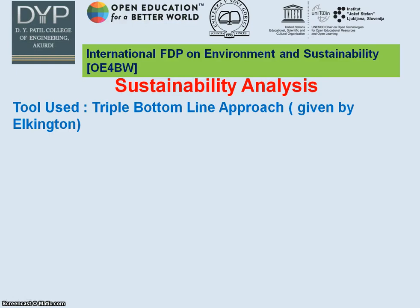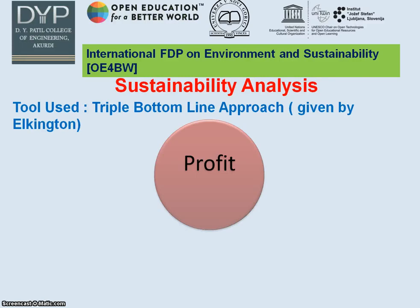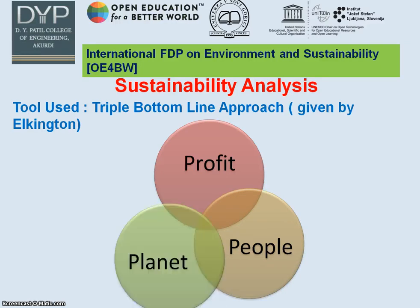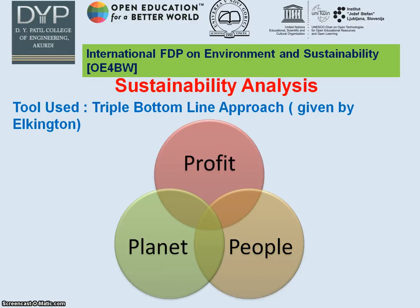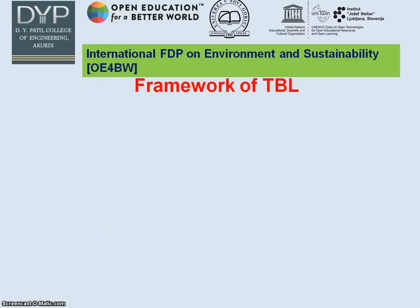For sustainability analysis, the tool used is the triple bottom line approach, given by Elkington. The first parameter is profit, which talks about the income statement and the benefit of the stakeholder. Then comes people, the social bottom line of the triple bottom line approach. And then the planet, or the environmental bottom line, which talks about the environmental approaches of industries.